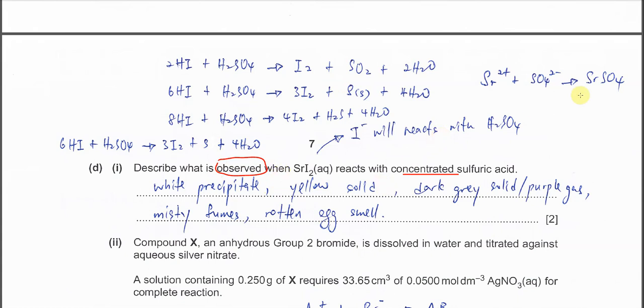First you will see a white precipitate because when the acid starts to react with the strontium iodide, the strontium and the sulfate will form a precipitate.